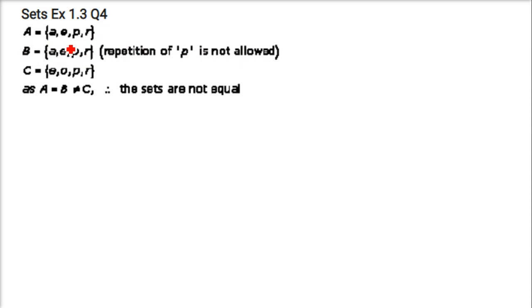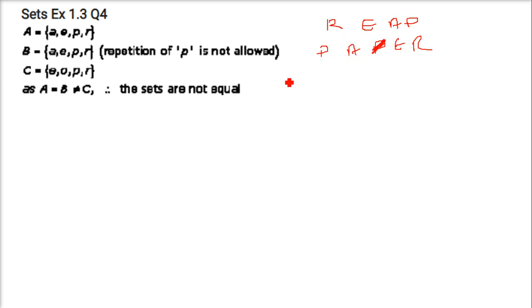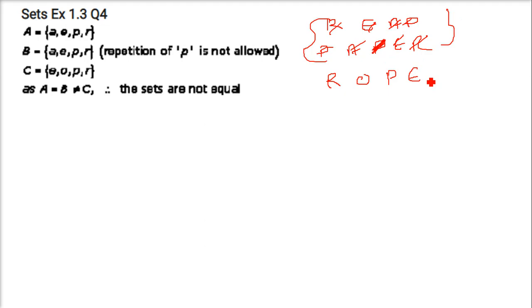Next: are the following sets equal? Set A is letters in the word 'reap': {r, e, a, p}. Set B is letters in 'paper': {p, a, p, e, r} — removing the repeated p gives {p, a, e, r} = {r, e, a, p}. Set C is letters in 'rope': {r, o, p, e}. A and B are exactly the same, but C has the letter 'o' which is not in A or B, so A and B are equal but C is not equal to them.